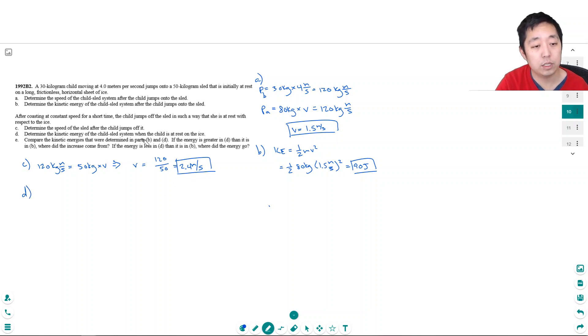D. Determine the kinetic energy of the child's sled system when the child is at rest on the ice. So the child's not moving, he has no kinetic energy. The kinetic energy is only due to the sled, which is 1/2 mv squared. Mass of the sled is 50 kilograms. Velocity is 2.4 meters per second, squared. I get this is 144 joules.